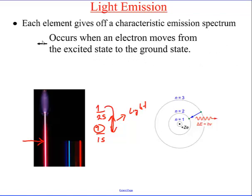That occurs when an electron moves from the excited state to the ground state. It's a very unique process. It's really quite amazing. We're going to look at a bunch of elements and look at the characteristic light they give off.